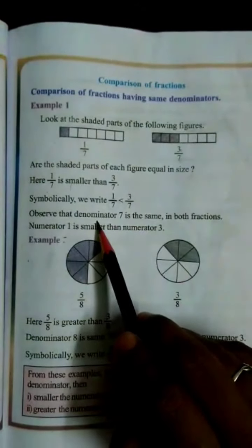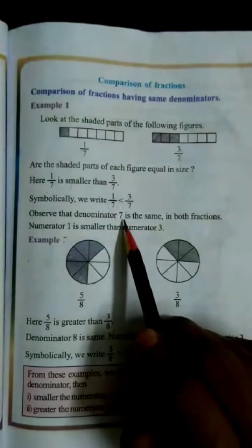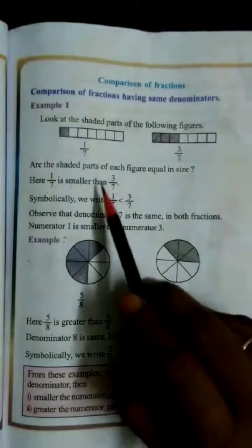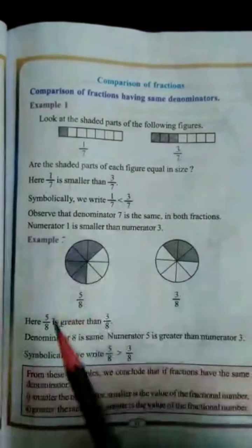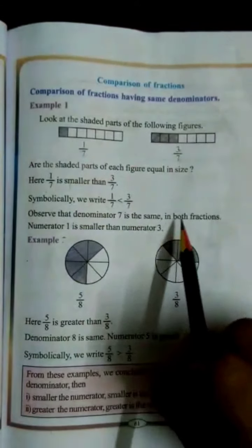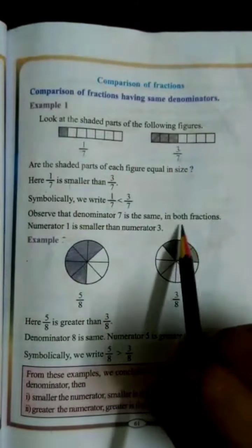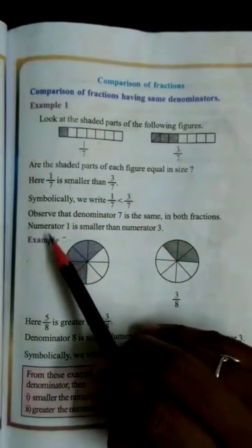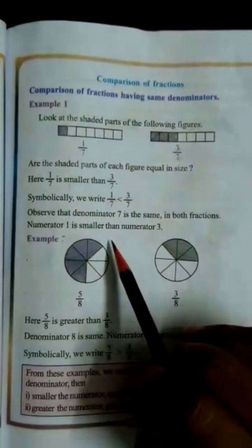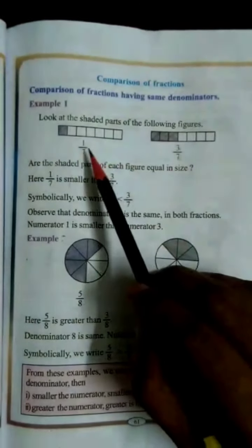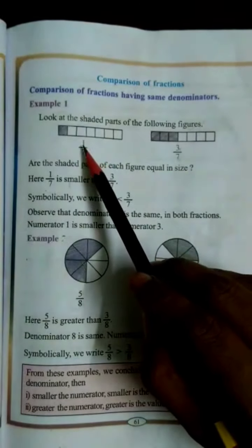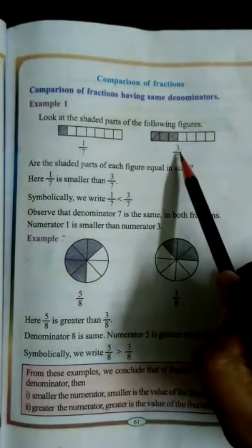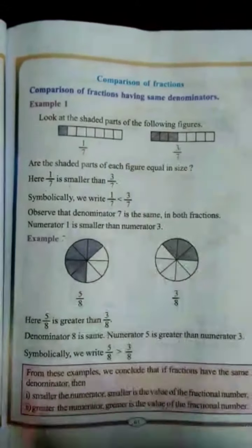Observe the denominator: 7 is the same in both fractions. But the numerator is different — 1 is smaller than 3.